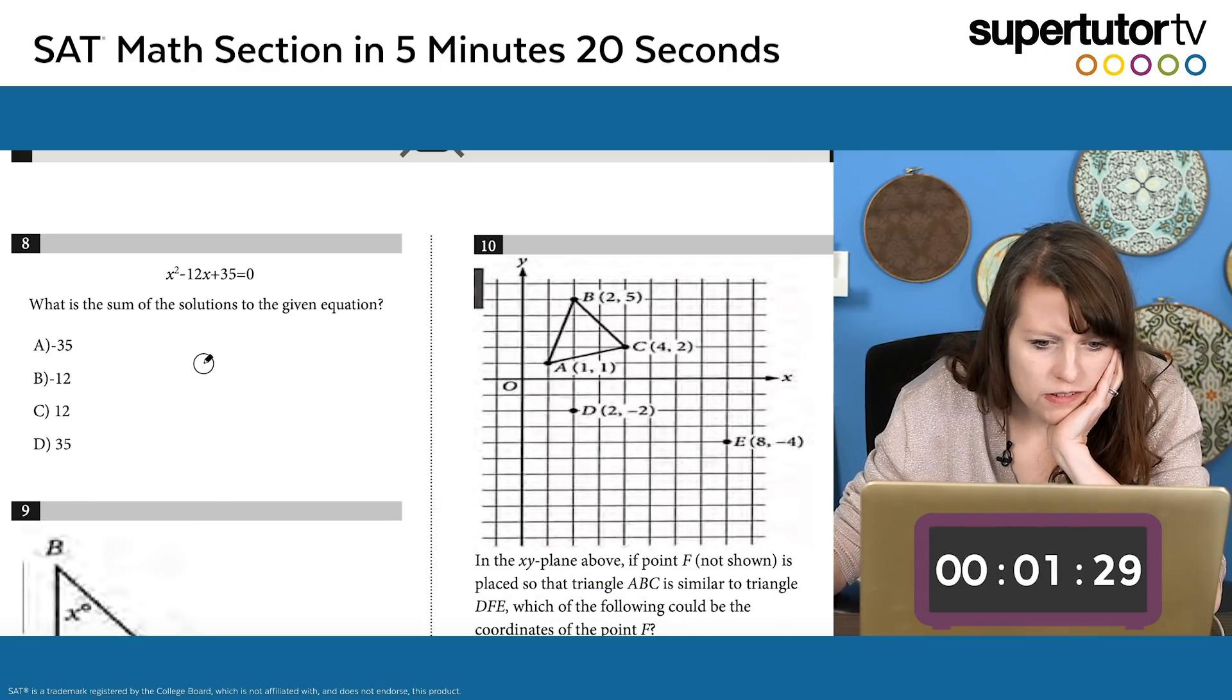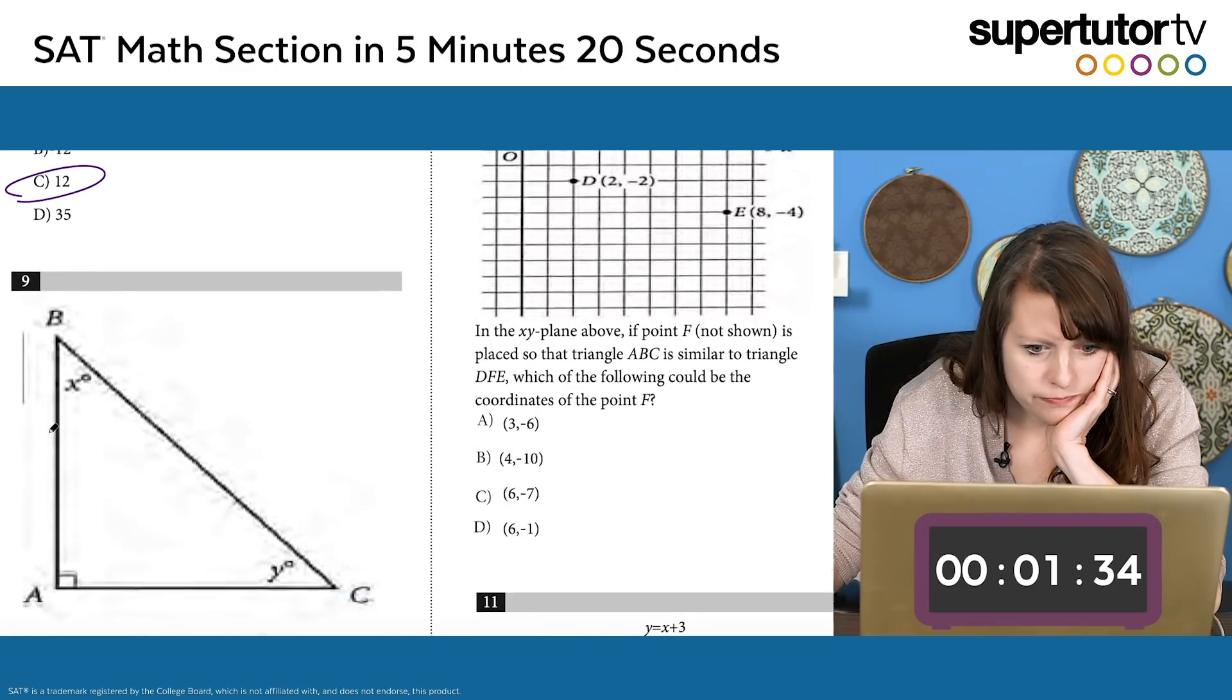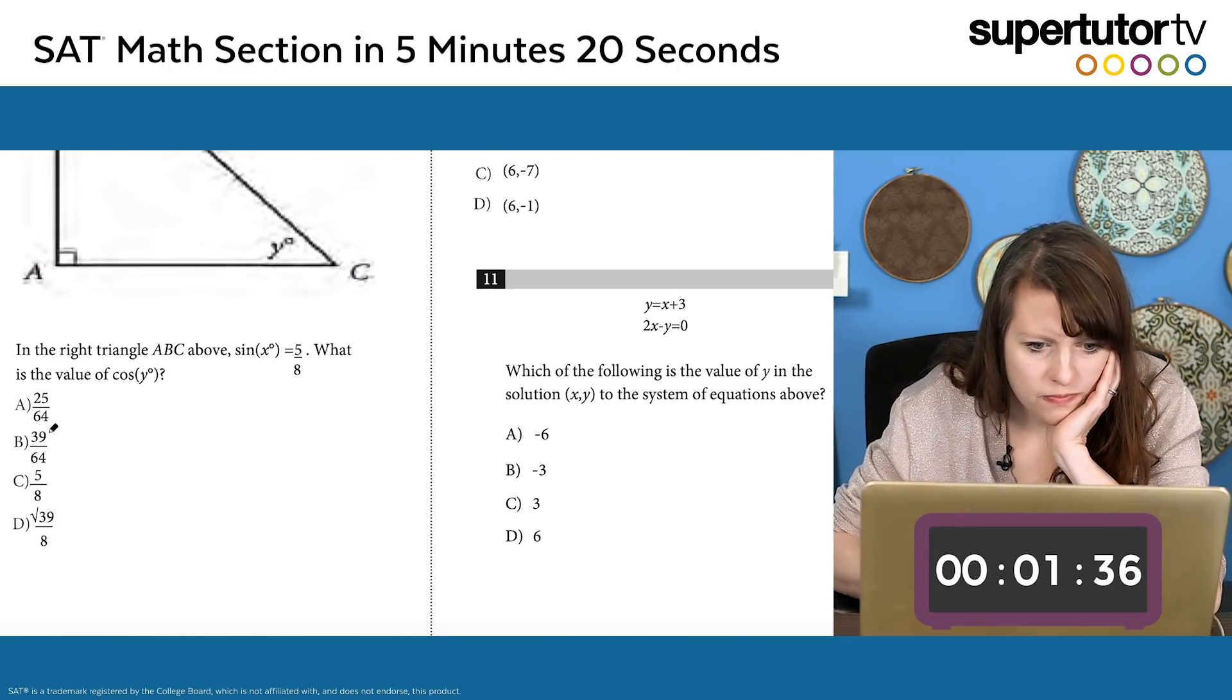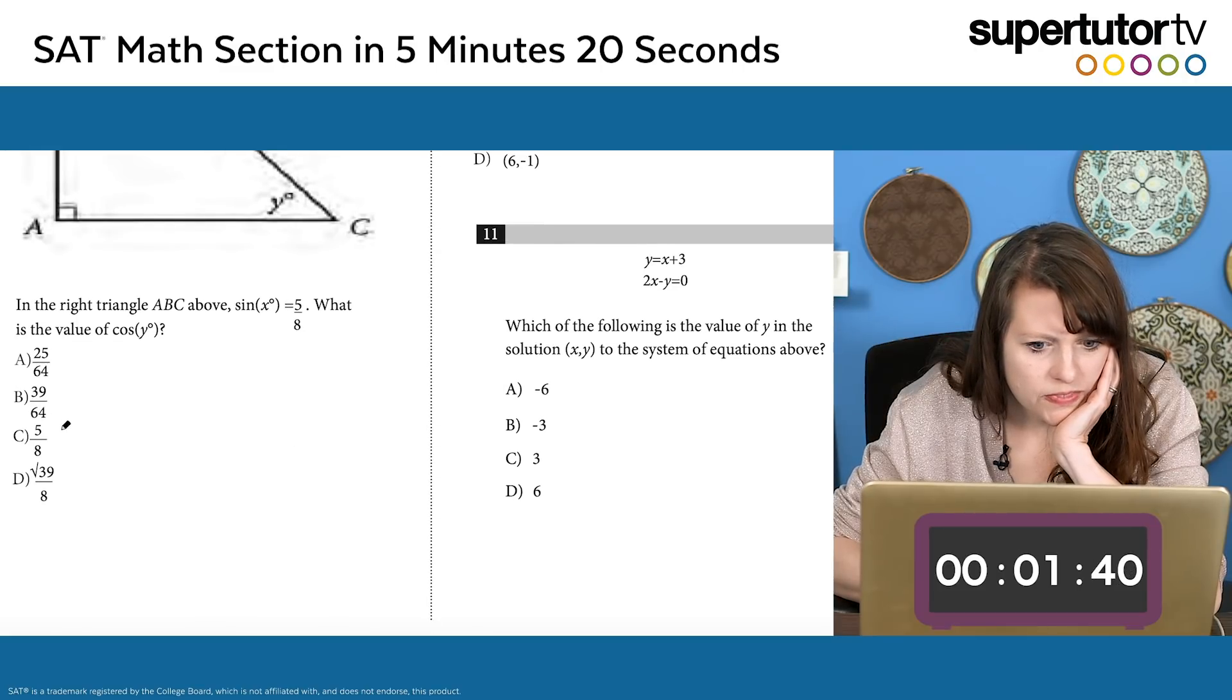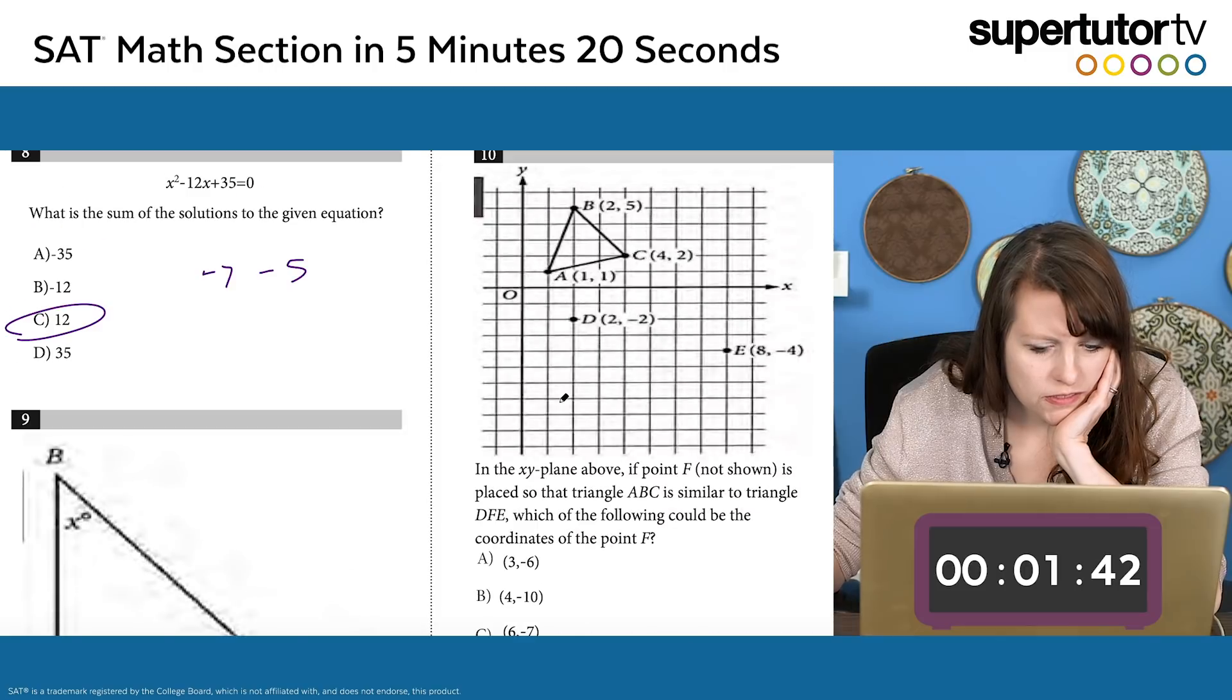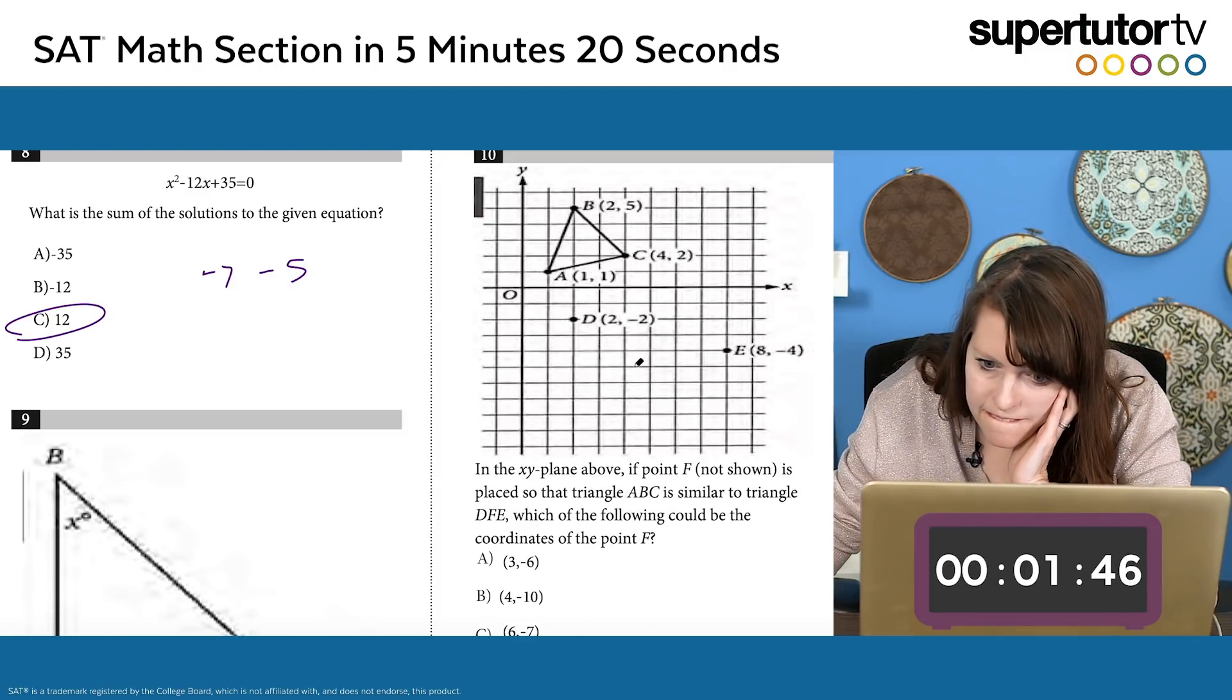What is the sum of the solutions in the given equation? The sum of solutions is going to be negative 7 times negative 5 is the factored form, but the solution is going to be the opposite sign, so it's going to be positive 12. Okay, here right triangle, we had 5 eighths was the sine of 1, and the other angle in a right triangle if it's cosine instead of sine, it's going to be the same number. So that's how I did that one.